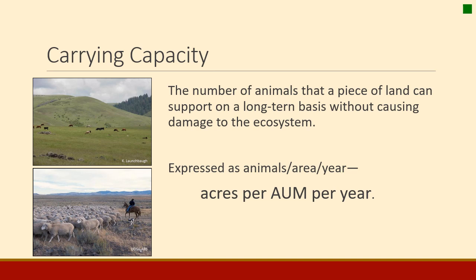First is carrying capacity. Carrying capacity is the number of animals that a piece of land can support on a long-term basis without causing damage to the land. Remember that rangelands evolved with grazing, so managing the number of animals can be done in a way that is not damaging to the ecosystem. Carrying capacity is largely determined by Mother Nature and expressed as acres per AUM per year — animal unit months.